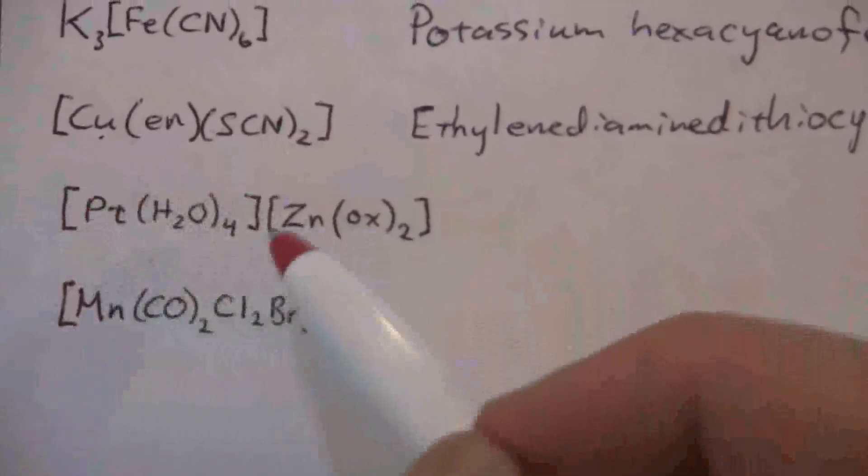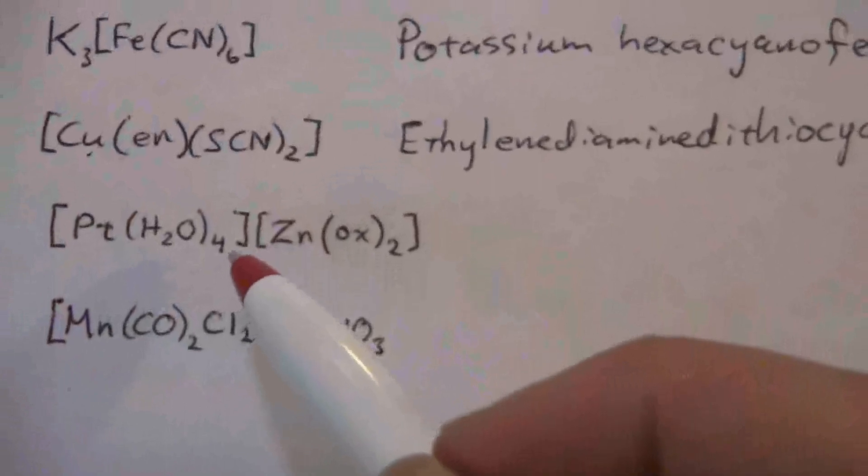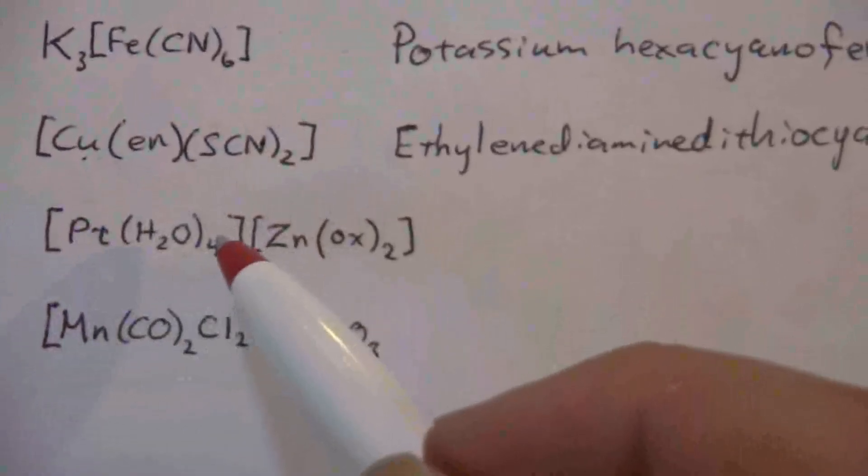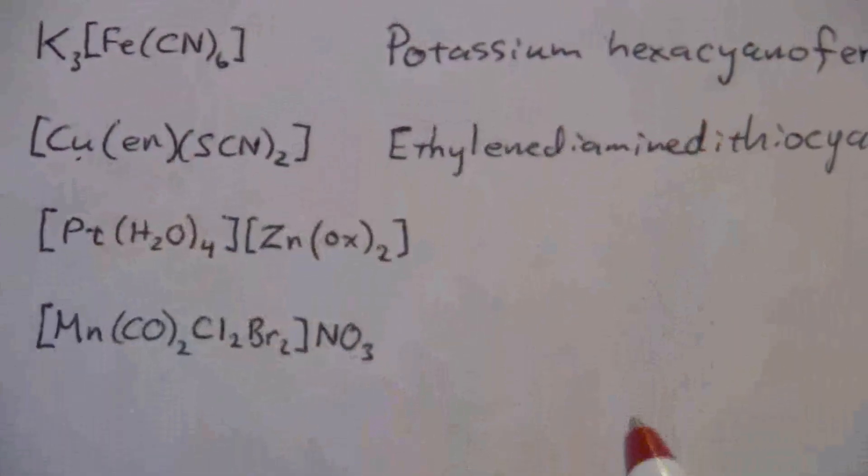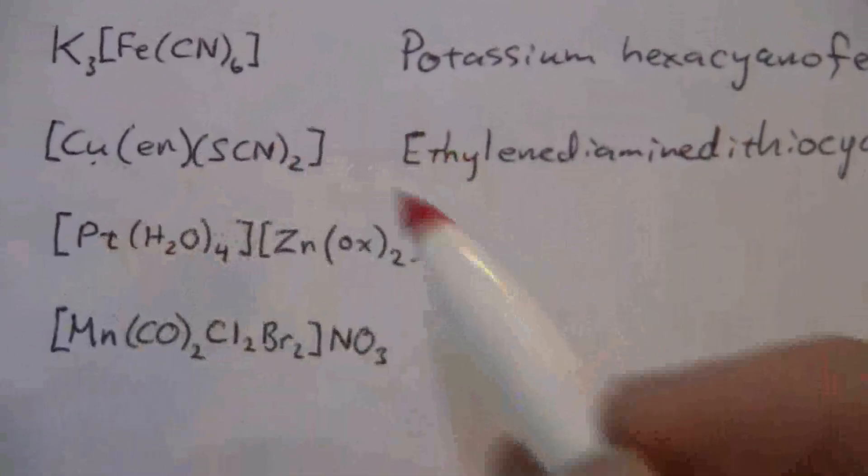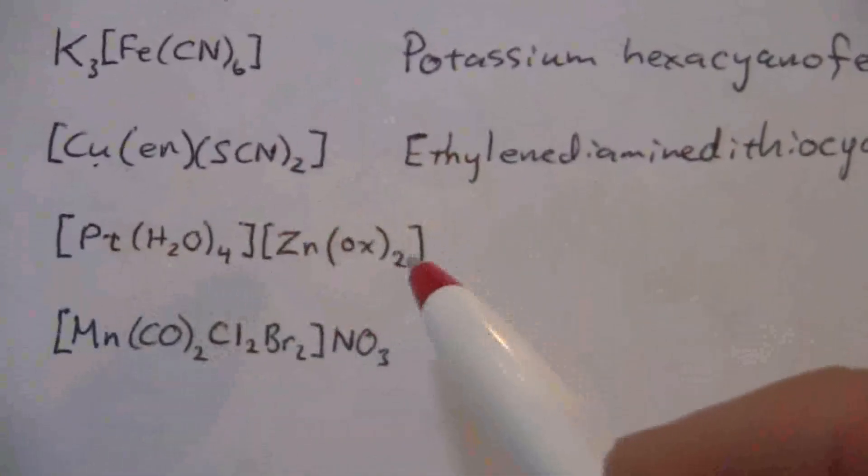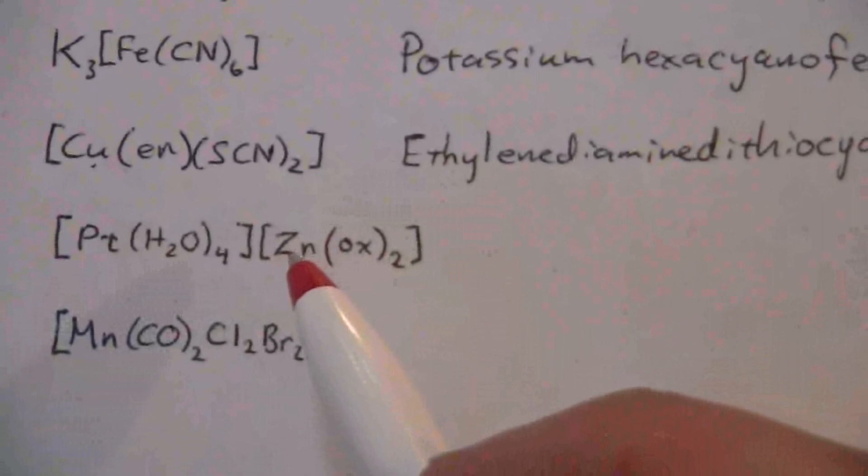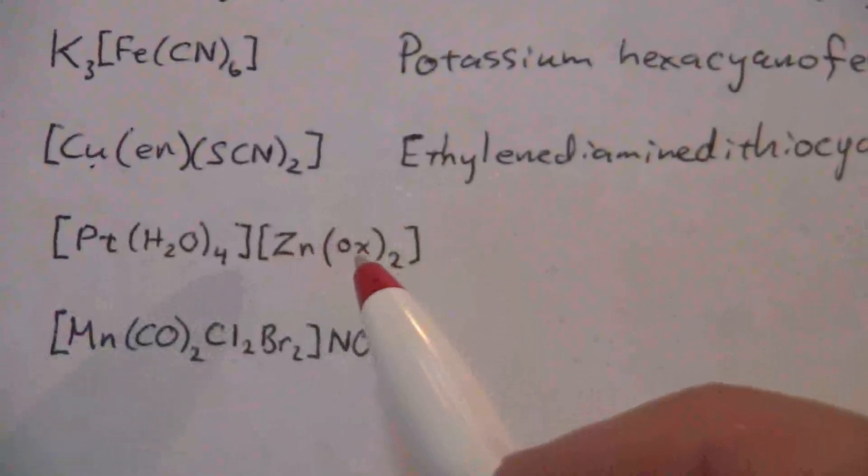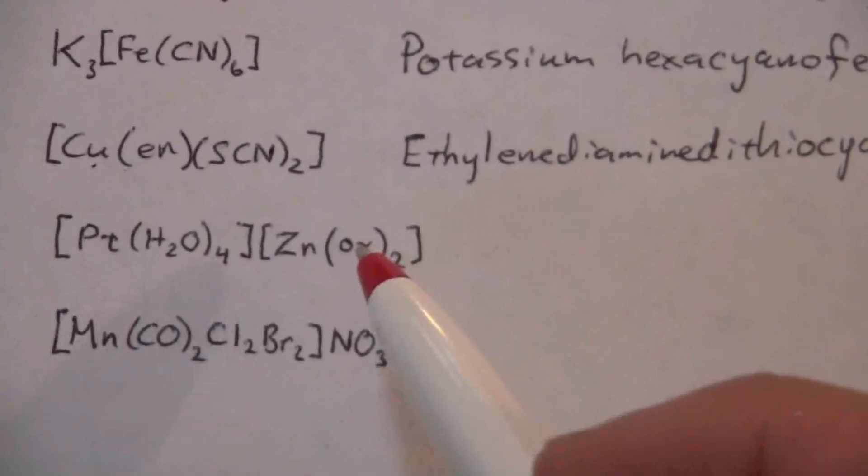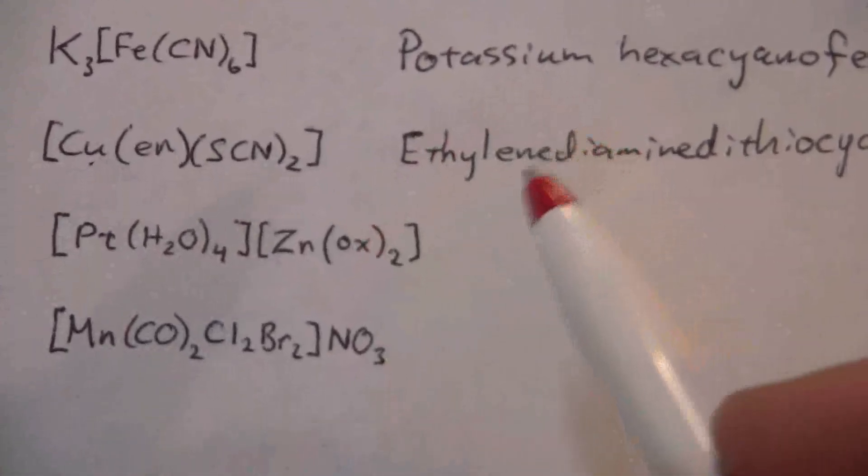So here we name the cation first and we need to know its charge, the charge of the platinum. In order to know that we have to look over at the anion. Now in this case we have zinc and then this is oxalate and there's two of those. The oxalate ion has a negative two charge.